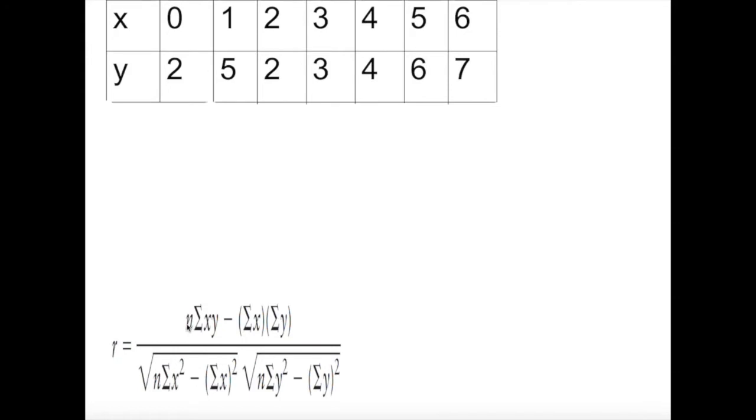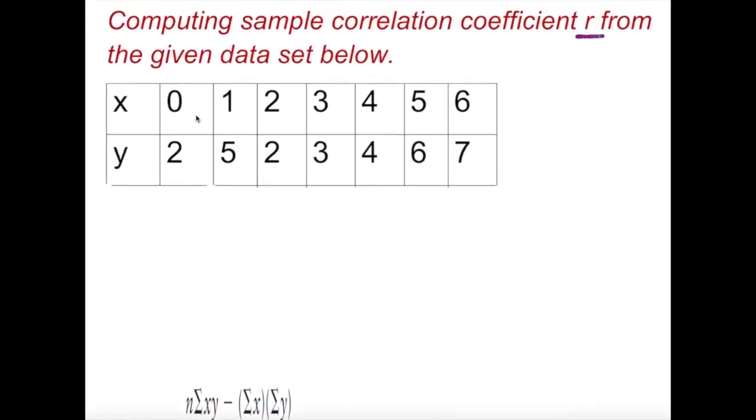So what is n? n is basically number of pairs actually. 1, 2, 3, 4, 5, 6, 7. So n is 7. It's not because this is 7, but there are 7 pairs, 7 ordered pairs. So that's basically n equals 7.